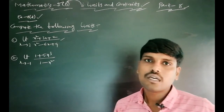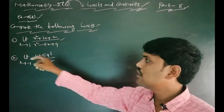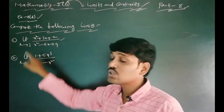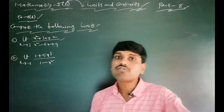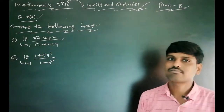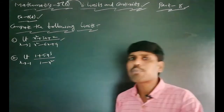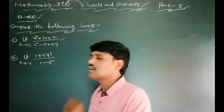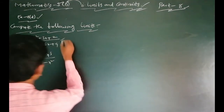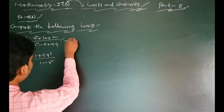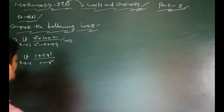Here in this problem, x tends to 3. The value 3 is a finite limit. So you can apply the direct limit here — simply substitute x = 3 directly.